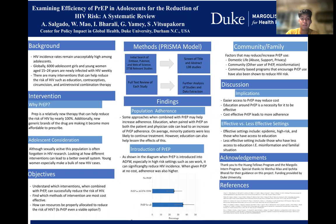For some background, HIV incidence rates were unacceptably high among adolescents, especially in sub-Saharan Africa and West Africa, and globally, 6,000 adolescent girls and young women aged 15 to 24 are newly infected with HIV weekly. We started looking at some interventions that could help reduce and target adolescents specifically, and even more specifically, those who are prioritized young women.